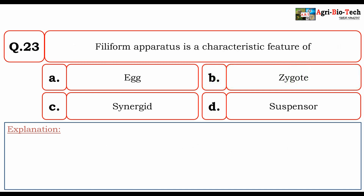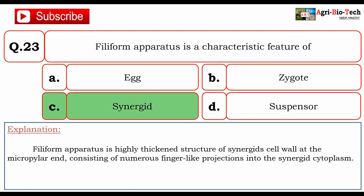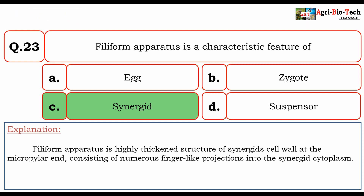Filiform apparatus is a characteristic feature of: A. egg, B. zygote, C. synergid, D. suspensor. The correct option is C. synergid. Filiform apparatus is a highly thickened structure of the synergid cell wall at the micropyle end, consisting of numerous finger-like projections into the synergid cytoplasm.